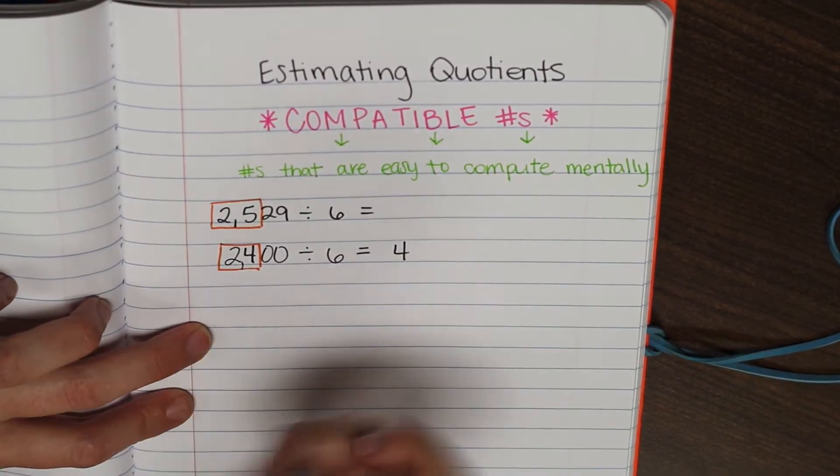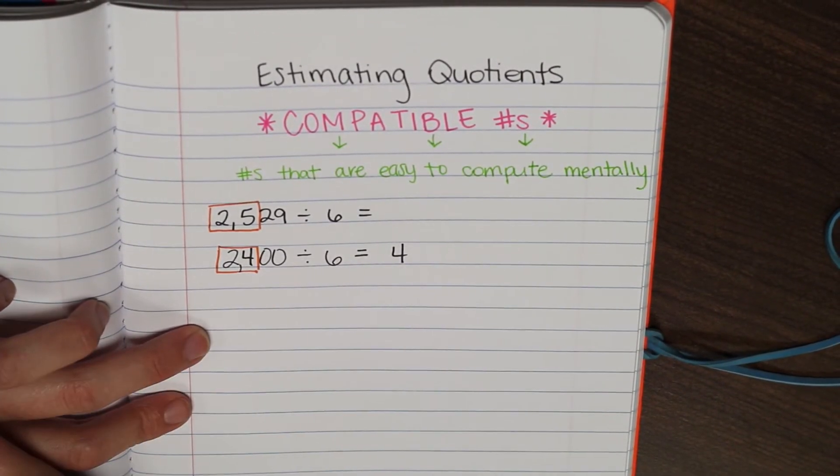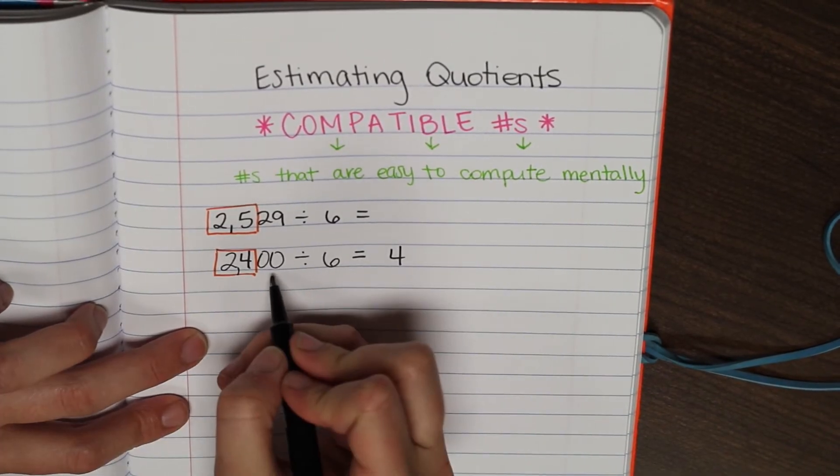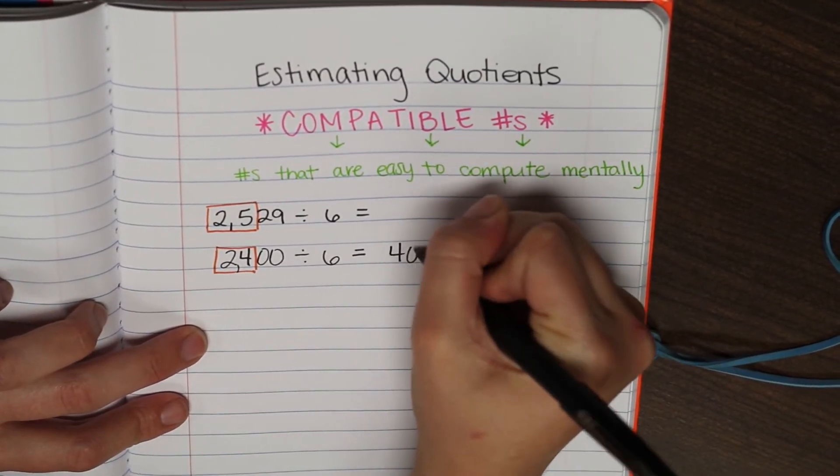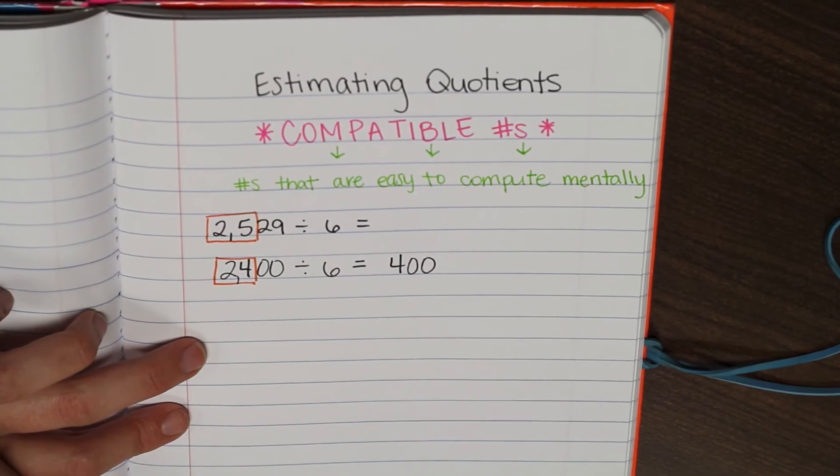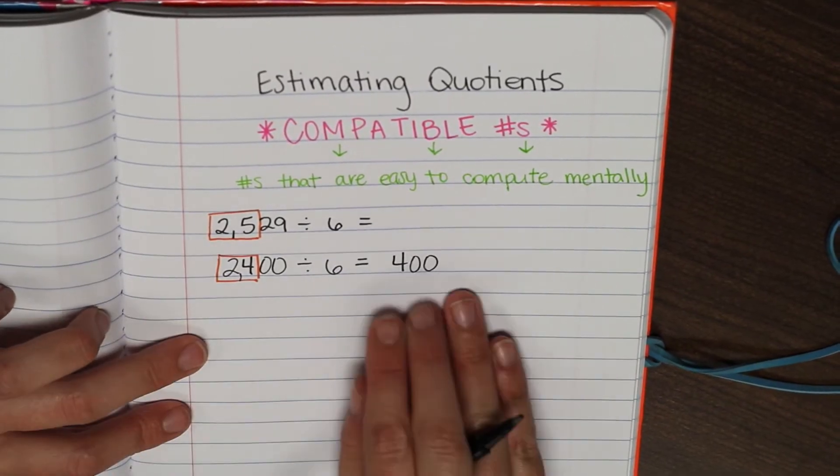Okay? And then we have two zeros at the end of our divisor. So we're just going to rename those zeros over here to make 400. So our estimate is about 400.